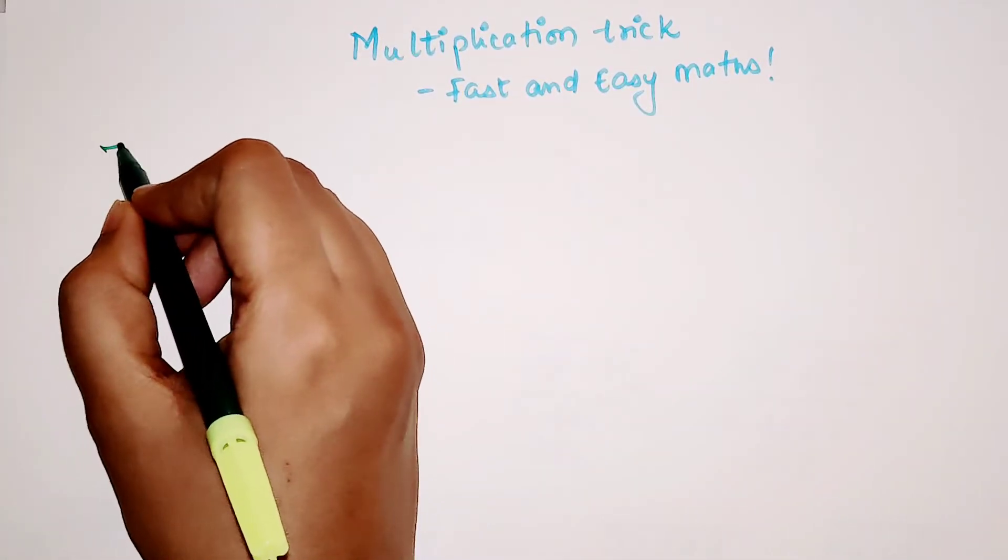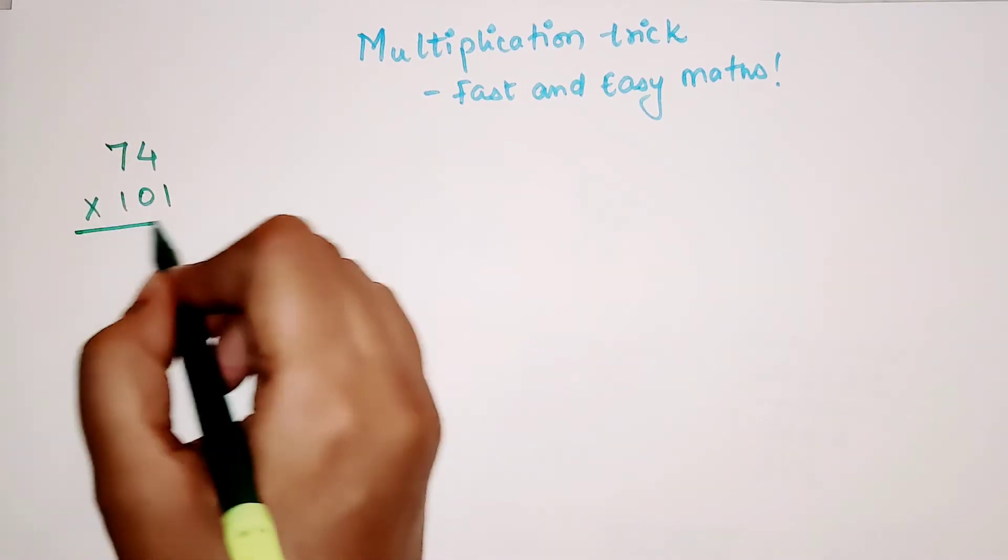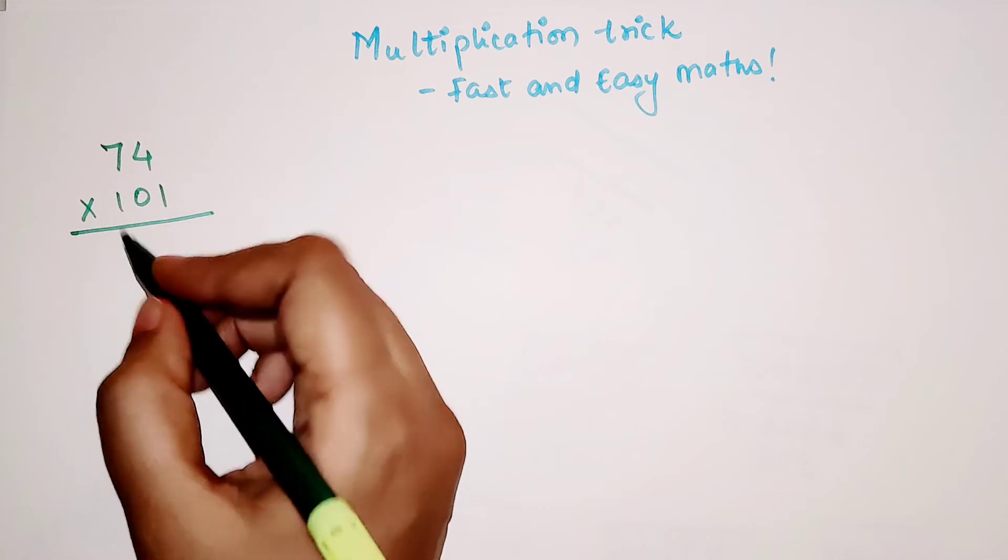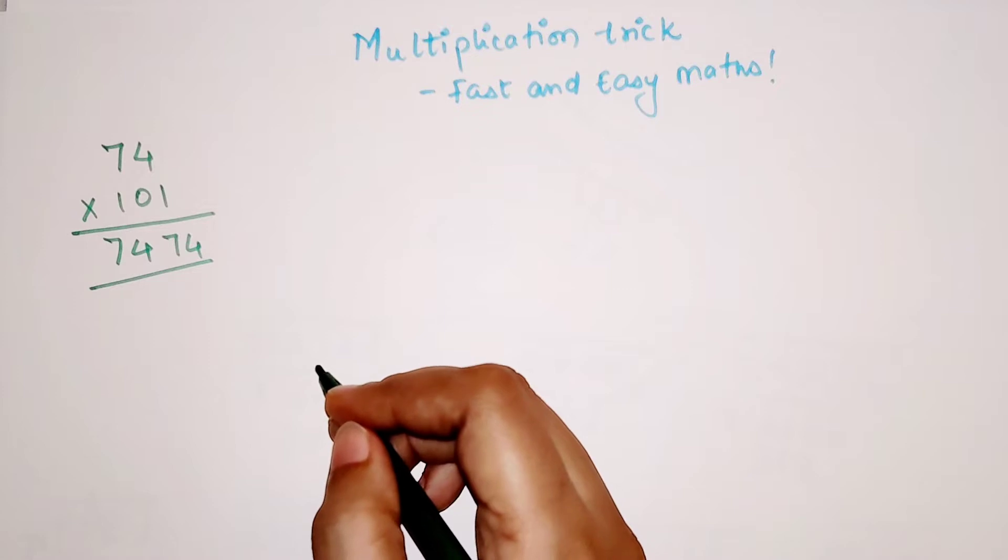If we have to multiply 74 into 101, then your answer to this one will be nothing but 74 and 74, that is 7474.